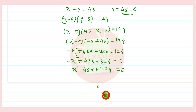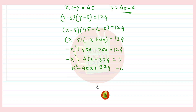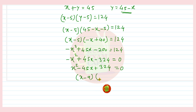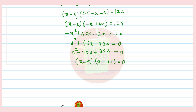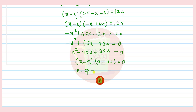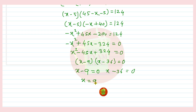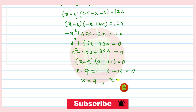We solve this quadratic equation by splitting the middle term. Splitting gives the factors (x − 9)(x − 36) = 0. Since the product of these two brackets is zero, either x − 9 = 0 or x − 36 = 0, giving x = 9 or x = 36.